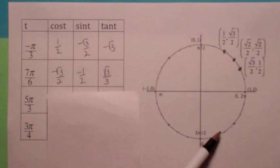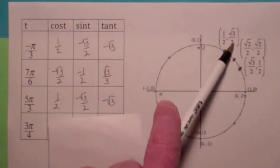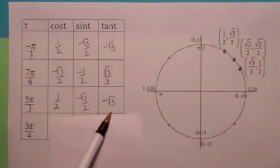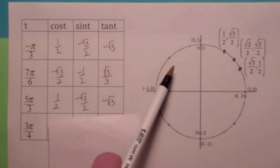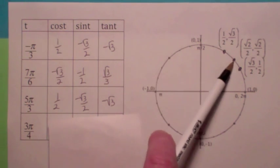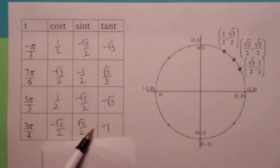For t = 5π/3, you end up in the fourth quadrant. x = 1/2, y = -√3/2, and the tangent becomes -√3. For t = 3π/4, that's easy — that's in the second quadrant. Same reference point, but x is negative and y is positive, so the tangent is -1.